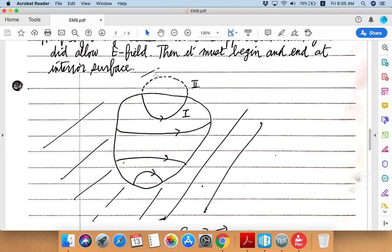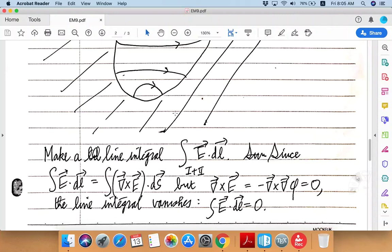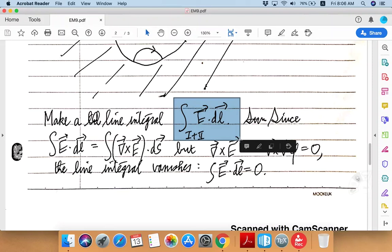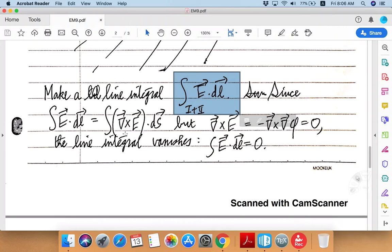So part of the closed path exactly follows the assumed electric field line in the hollow region, and the other part of the path traces out some curve on the inside of the conductor. Okay, together they make up a closed path like this.